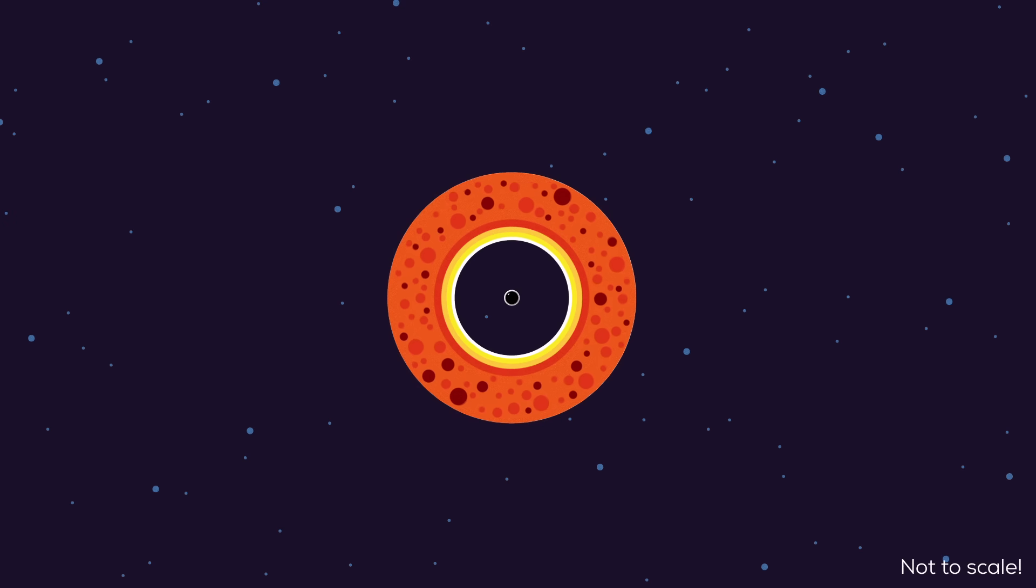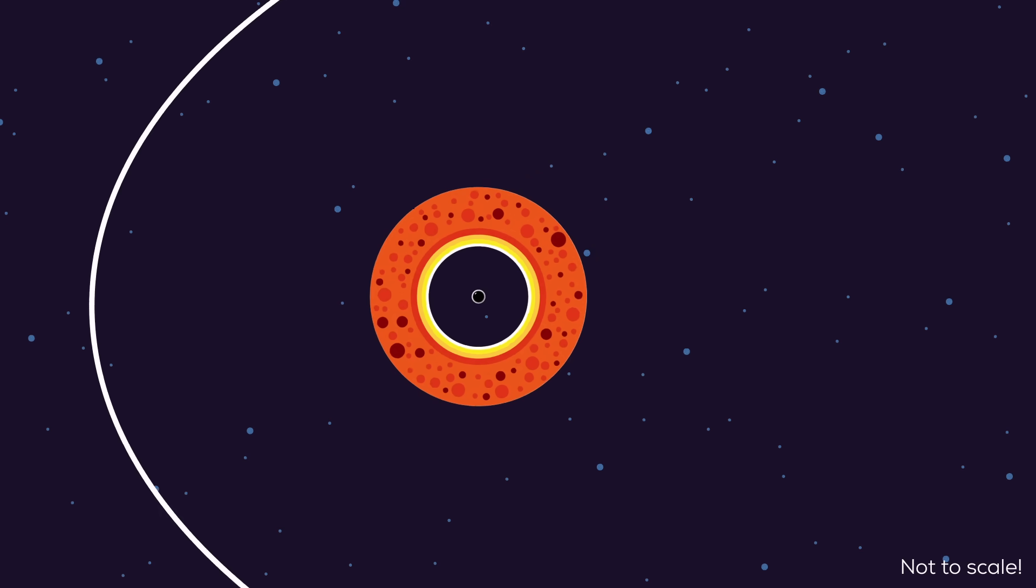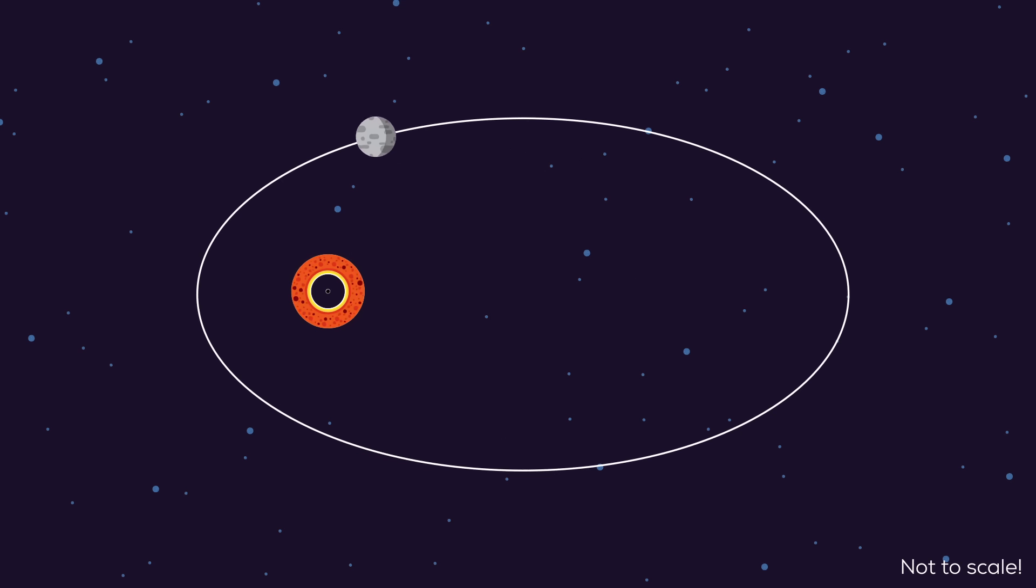As the Earth is eaten up from the inside, it collapses into a scattered disk of hot rock surrounding the black hole in a tight orbit. The black hole slowly doubles its mass by the time it's done feeding. The Moon's orbit is now highly elliptical.